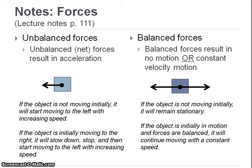A real-world example is throwing a ball up in the air. Gravity is always acting to pull the ball back down toward the Earth. If it's initially moving upward, the unbalanced force is in the opposite direction, so the ball gradually slows down until it comes to a stop at the top of its path, then reverses and comes back down with increasing speed. When motion is opposite to the net force, the object decreases its speed.